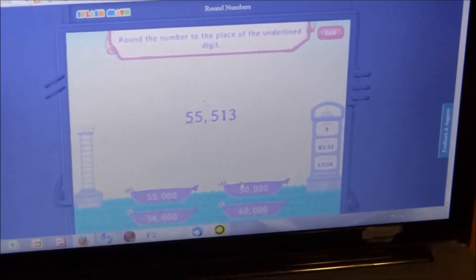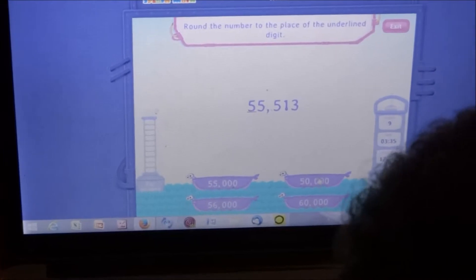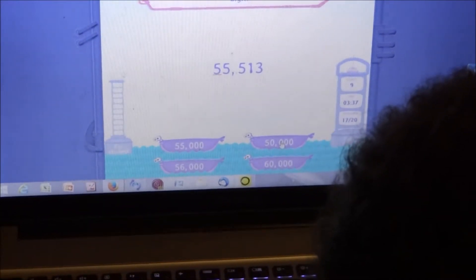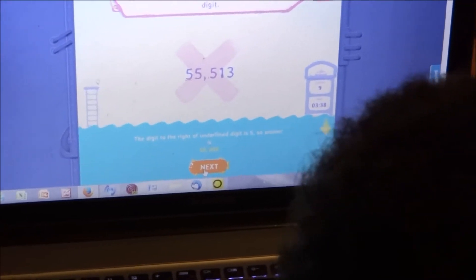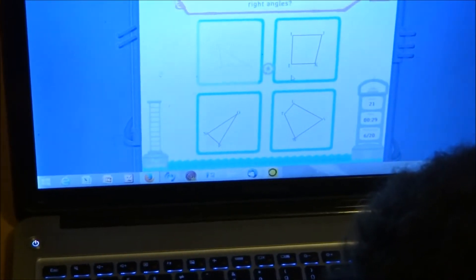So what are we doing here? Which digit is underlined? So 55,000. 55,000 is closer to... Because 55...